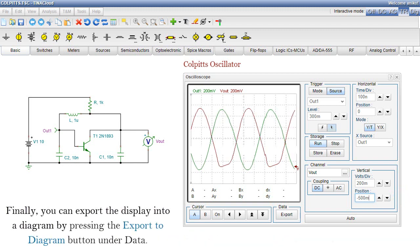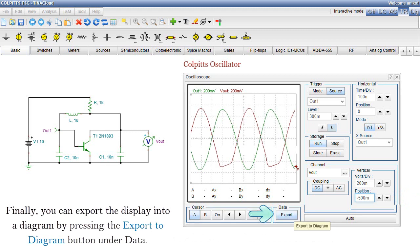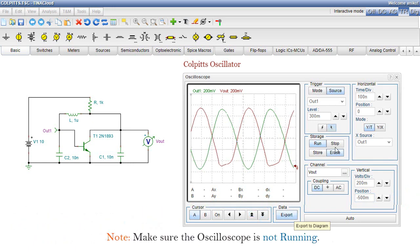Finally, you can export the display into a diagram by pressing the Export to Diagram button under Data. Note, make sure the oscilloscope is not running.